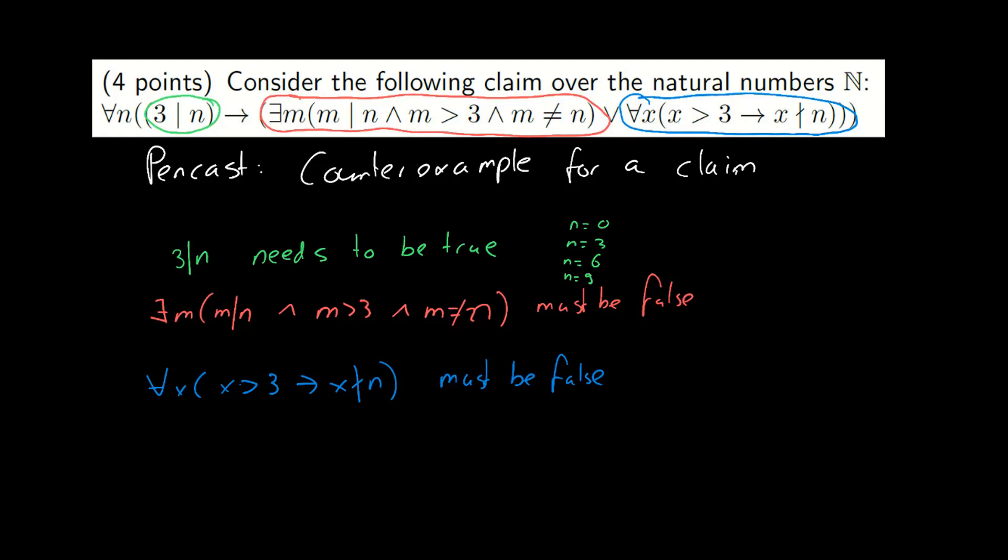How about that last part? If a for-all needs to be false, that means that there must be a number, in this case a number that's larger than 3, that divides n. Remember, we're again making an implication false here. So there must be some number for which x is larger than 3 and x does divide n.